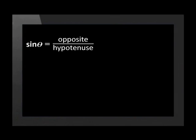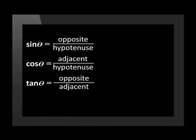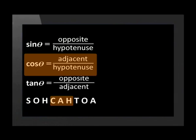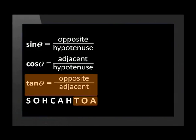Now that we've looked at two examples for each ratio, you will see the pattern. Sine is equal to opposite over hypotenuse. Cos is equal to adjacent over hypotenuse. And tan is equal to opposite over adjacent. These ratios need to be learned by heart. One easy method is to remember the acronym SOH-CAH-TOA. This reminds us that sine is equal to opposite over hypotenuse, cos is equal to adjacent over hypotenuse, and tan is equal to opposite over adjacent.